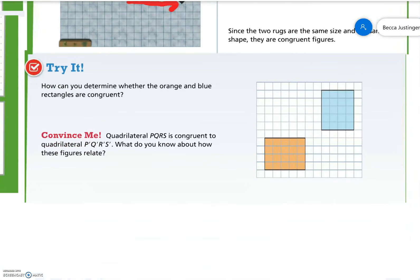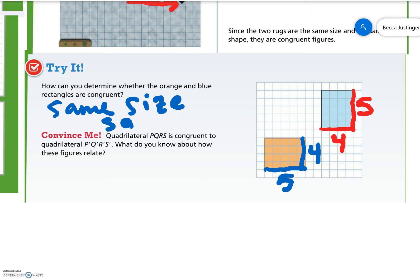Let's try it. How can you determine whether the orange and the blue rectangles are congruent? Well, we can look at their size and the shape. They're both rectangles, and this has a width of 4 and a length of 5. This rectangle has a width of 5 and a length of 4. So they are the same size and the same shape. That tells me that we can use a sequence of translations to move one onto the other. So we would use a rotation and a translation.